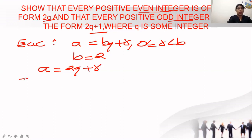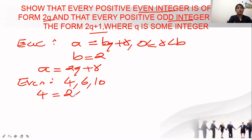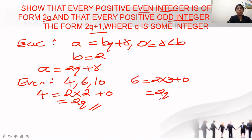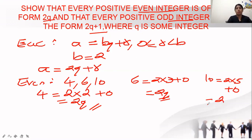They are asking about even integers and odd integers. We can try for even integers — take 4, 6, or 10. If I substitute a as 4: 4 equals 2 into 2 plus 0, so this is in the form 2q. If I take 6: 2 into 3 plus 0, also in the form 2q. Any even number can be expressed as a multiple of 2 with remainder 0. So every positive even integer can be written in the form 2q.